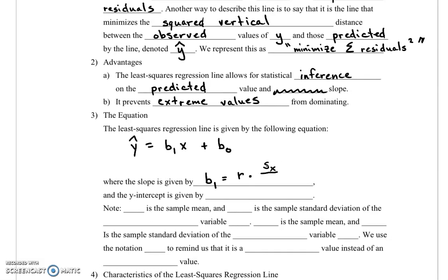And the y-intercept we find by doing b0 equals the mean of the y variable minus b1 times the mean of the x variable. Let's remind ourselves of what all these letters mean.